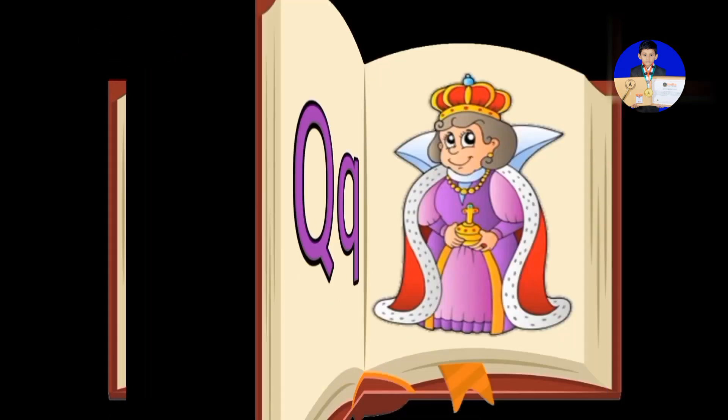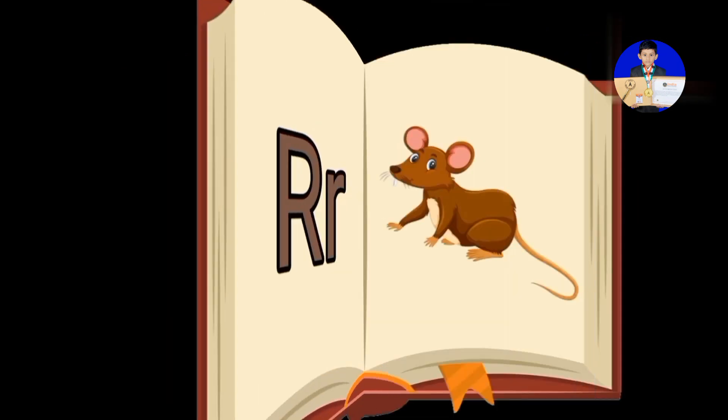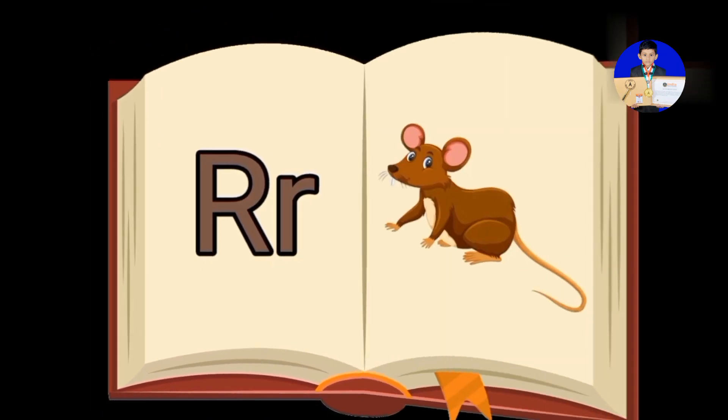Q is for Queen. R is for Red. H is for Snake.